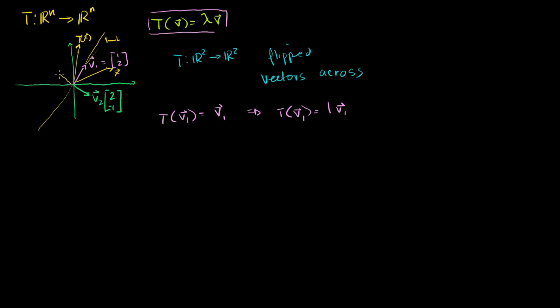And that was a pretty interesting vector for us as well, because the transformation of V2 in this situation is equal to what? Just minus V2. Or you could say that the transformation of V2 is equal to minus 1 times V2.